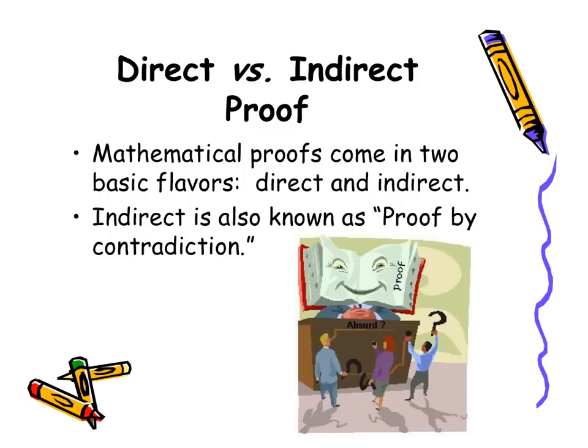So we basically have two different proofs here in geometry: direct and indirect proofs. And an indirect proof is also known as a proof by contradiction. We'll see what that means in just a sec.